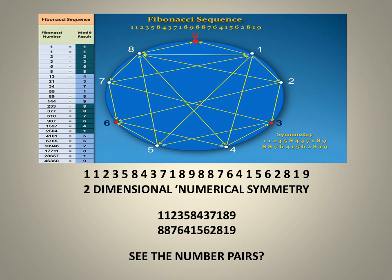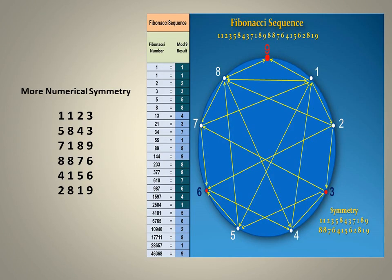Upon further investigation, I noted that if you take the second 12 numbers of the sequence and place them under the first 12, you can see a beautiful numerical symmetry in the mod 9 sequence where top and bottom numbers form number pairs. Even more interesting is writing the Fibonacci sequence mod 9 in four columns of six numbers: column 1 shows the doubling circuit numbers 1, 2, 4, 8, 7, 5; column 2 shows the 1 and 8 number pair; column 3 shows the doubling circuit numbers again; and column 4 shows the 3, 6, 9 family number group attributed to magnetism.